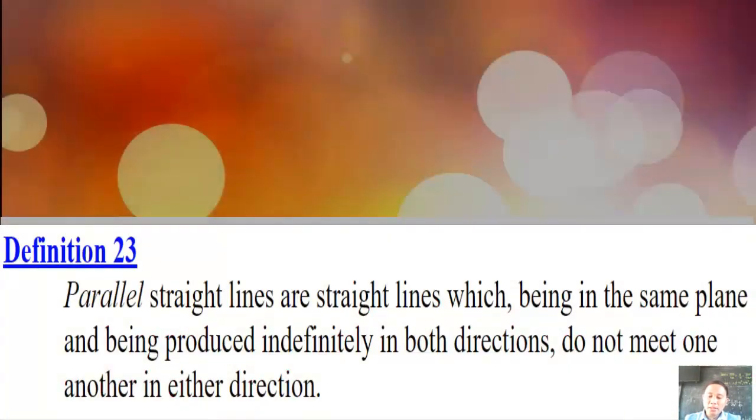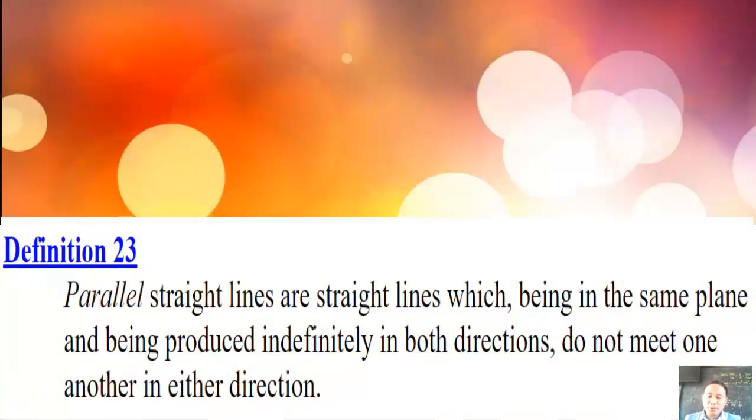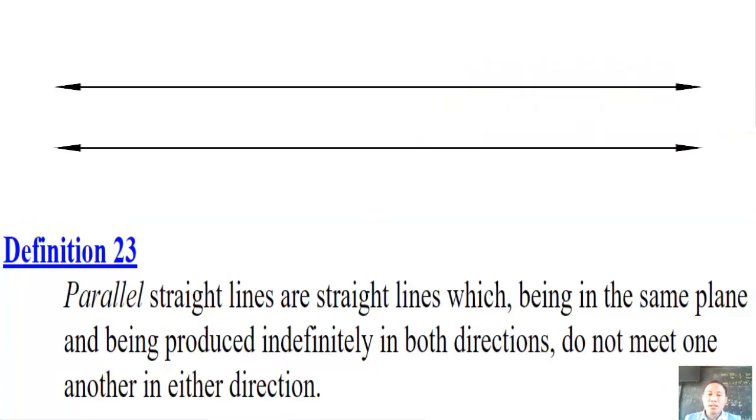But Euclid presented the definition of parallel lines in his Book 1, Definition 23. Parallel lines are straight lines which being in the same plane and being produced indefinitely in both directions do not meet one another in either direction.